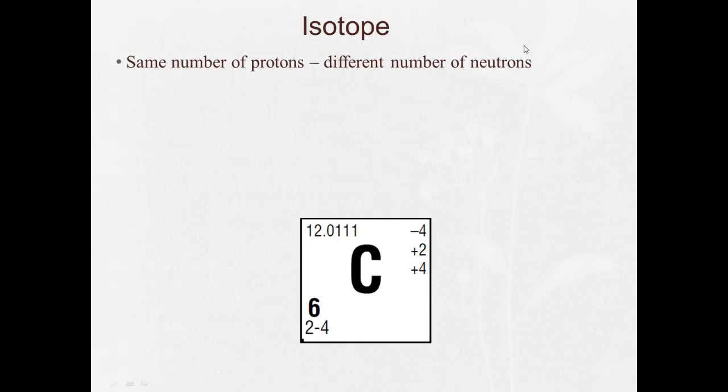There's a fancier definition to that, but this is what you have to memorize. Isotope: same number of protons, different number of neutrons.